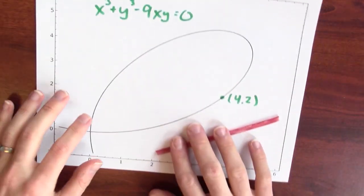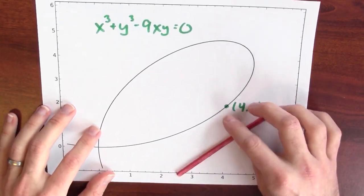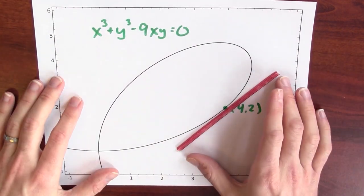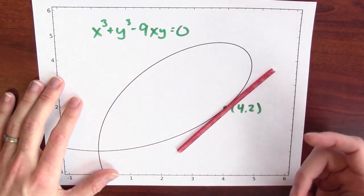And yeah, that doesn't look terribly far off. I mean, this graph is a little bit stretched, but you know, that line looks like, yeah, it could very well have slope 5 fourths.